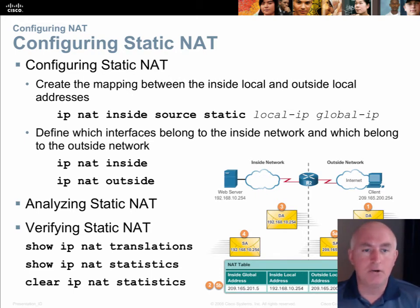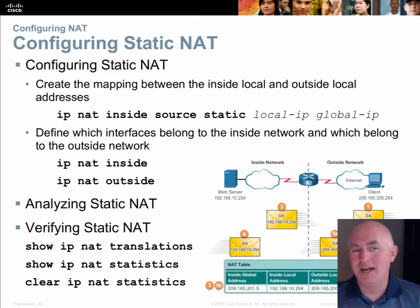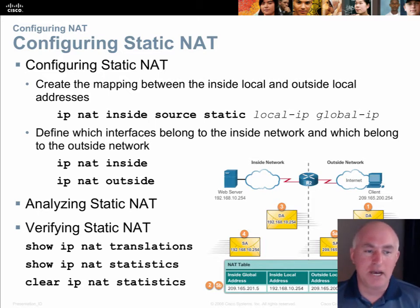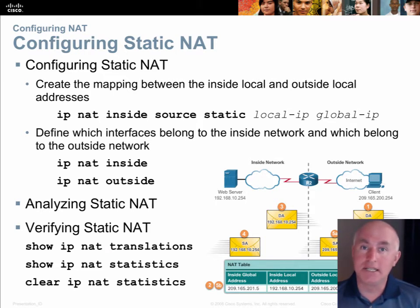Then you have to apply it — tell the router which interface will be the inside interface and which will be the outside. The inside interface is the one with private IPs; the outside is the one with public IPs. To verify, type 'show IP NAT translations,' which will show a permanent entry in the translation table for that private-to-public address mapping — because this is static NAT, it will always be a permanent entry.